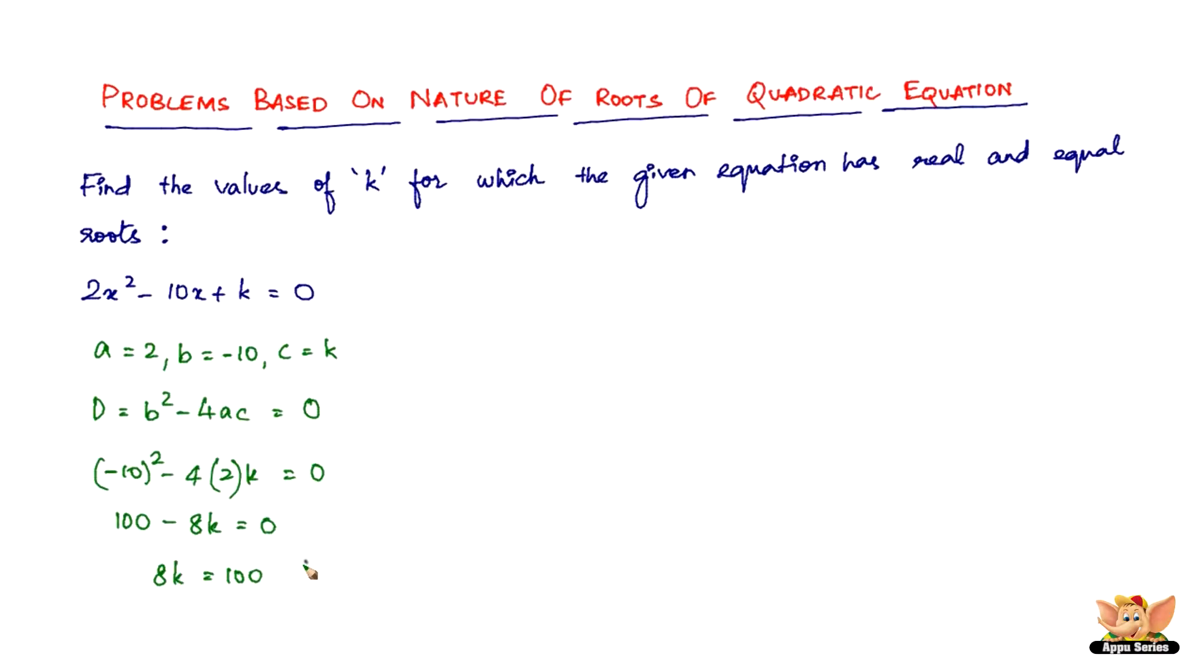Or k equals 100 divided by 8, which is 4 goes 25 times in 100 and it goes 2 times in 8, so k equals 25/2. So the value of K for the given equation such that the roots are real and equal is k equals 25/2. So this is how you find the value of K when the nature of the root is mentioned.